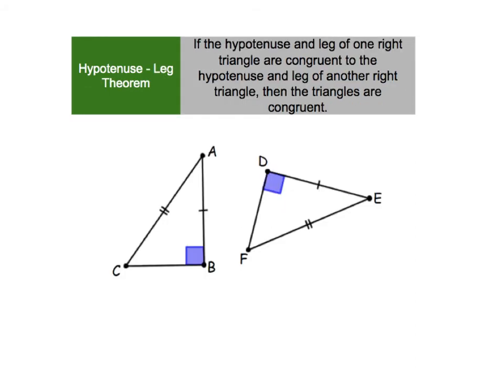The hypotenuse leg theorem tells us that if the hypotenuse and leg of one right triangle are congruent to the hypotenuse and leg of another right triangle, then the triangles are congruent. We can abbreviate the hypotenuse leg theorem as HL. H for hypotenuse, L for leg. When you're checking to see if hypotenuse leg theorem works, you first have to check, do you have right triangles?